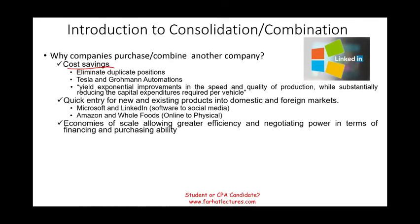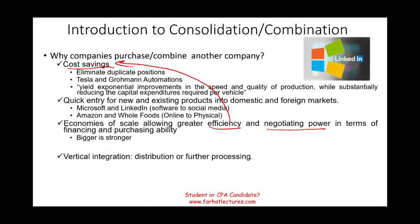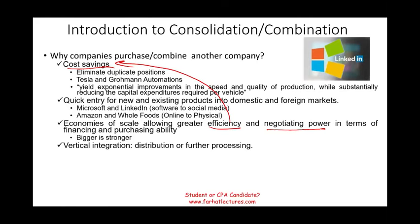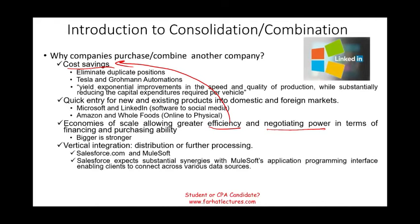Another reason is economies of scale, allowing greater efficiency — basically cost savings — and greater negotiating power in terms of financing and purchasing ability. If you go to the bank as a larger entity, you might negotiate a lower rate, or negotiate better terms with a supplier. Bigger is usually stronger. It could also be vertical integration, helping with distribution or further processing of your product. A good example is Salesforce.com and MuleSoft: Salesforce expected substantial synergies, with MuleSoft's application programming interface enabling clients to connect across various data sources.